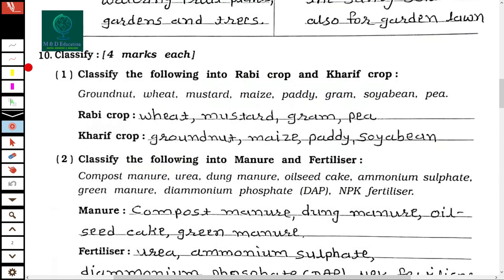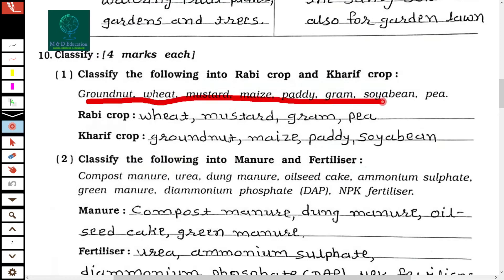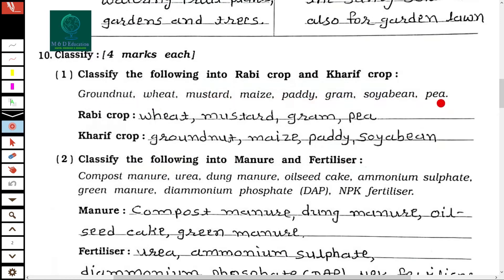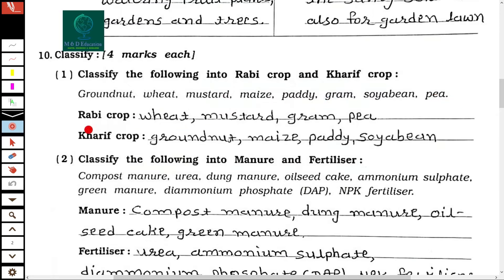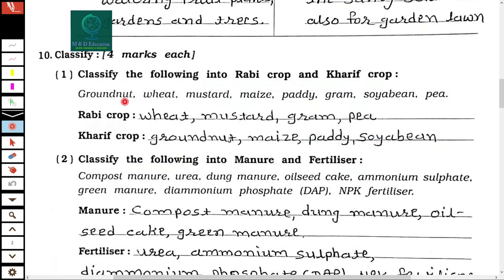Main question number 10: classify the rabi crops and the kharif crops from the given list. The rabi crops are wheat, mustard, gram, and pea. The remaining crops — groundnut, maize, paddy, and soybean — are all kharif crops.